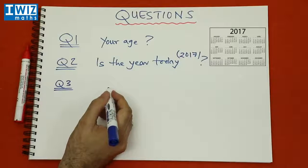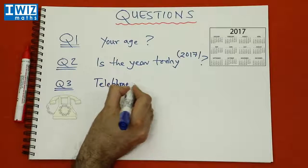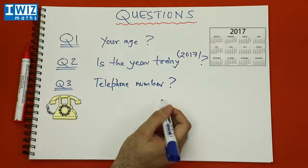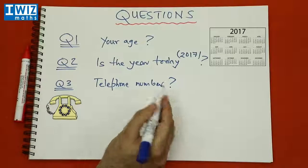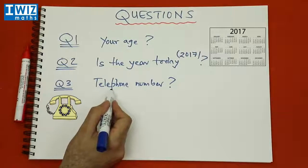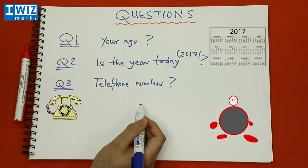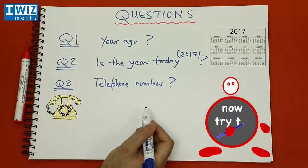Question three is to work out whether your telephone number is a prime number or not. In case you don't have a telephone, just find somebody who does — a friend or family member — and try to work out whether that telephone number is a prime number or not. First try it with your own telephone number. These questions should give you some sense of what prime numbers are, so get yourself some pen and paper and have a go at them.